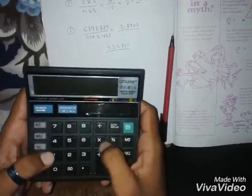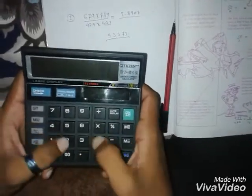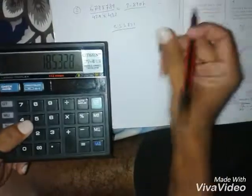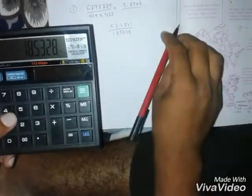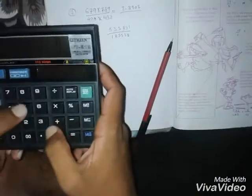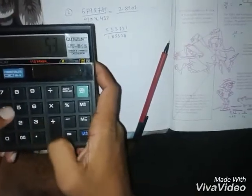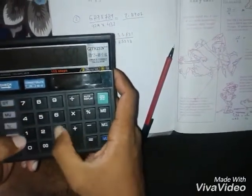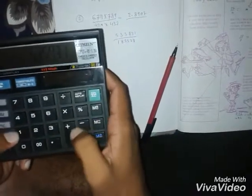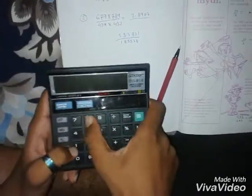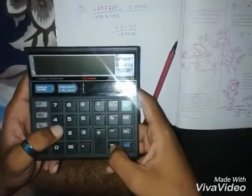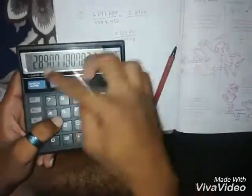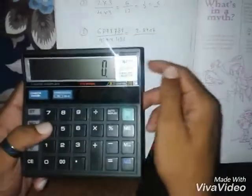429 into 432 equals 185328. 535731 divided by 185328 equals, see, the same number. So I am going to tell, this is very useful for students.